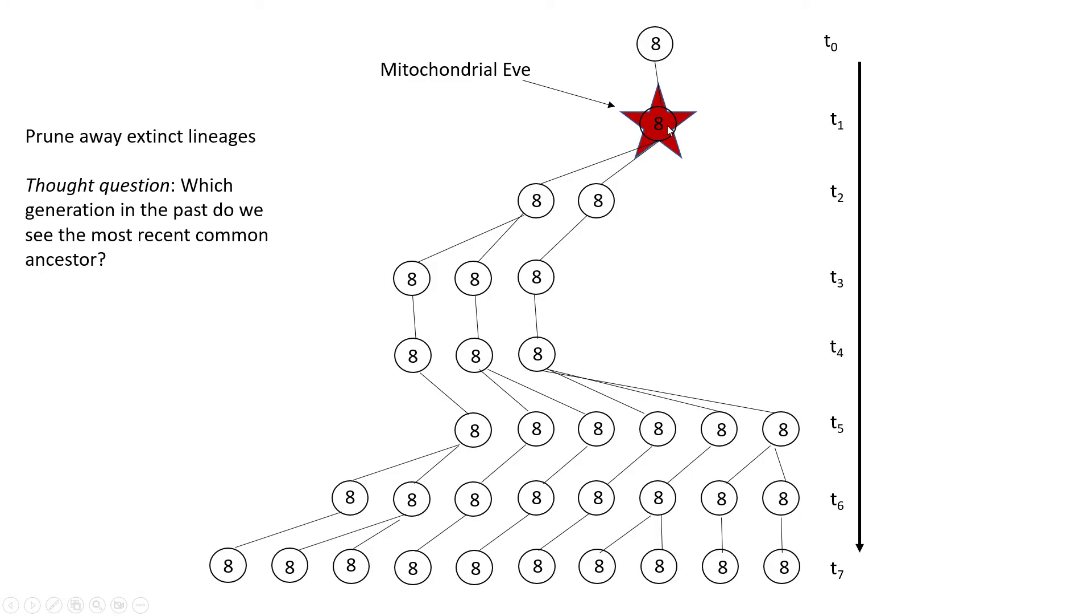Now note immediately what that tells us, right? For one, we are missing that there were a whole bunch of other individual lineages in the population that just by chance went extinct. And that also this is not the oldest individual. There was an individual older than them.